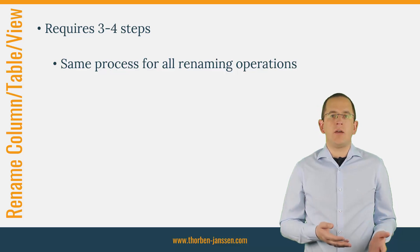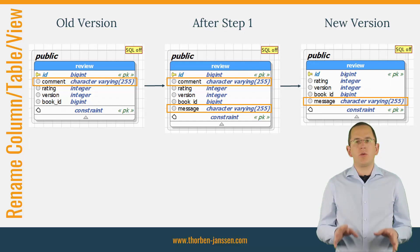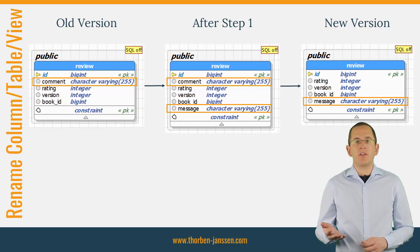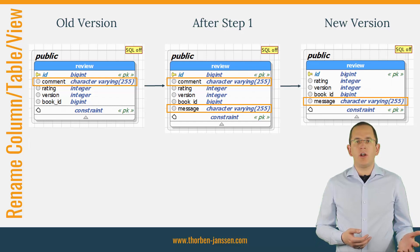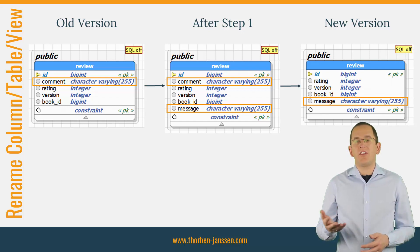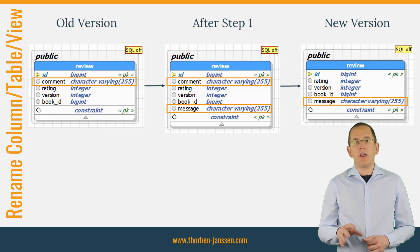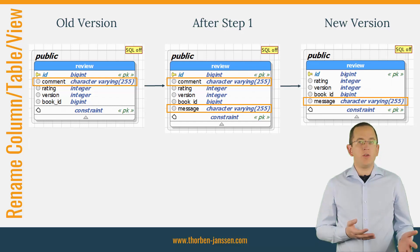Let's first take a look at an example. The table 'review' contains the column 'comment', which I want to rename to 'message'. This requires multiple steps. In the first one, you need to add the database column and initialize it with the data from the old column. Then you need to update all application instances before you can remove the old column. Unfortunately, the most complicated part isn't the database migration itself, and it's therefore not visible on this diagram. The main issues occur during the rolling update, which is between step 1 and the new version.